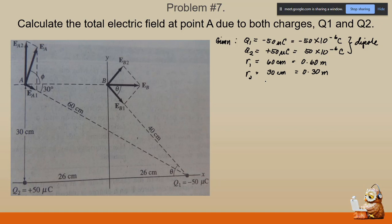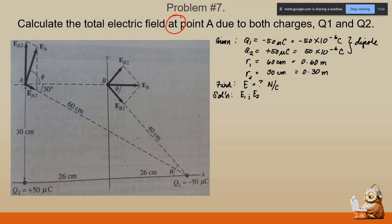Let's proceed with the total electric field, denoted by capital E. With point A as the reference particle, we have two electric fields acting at point A due to charges q sub one and q sub two — E sub one and E sub two. Let's first find the magnitudes of E sub one and E sub two.